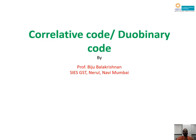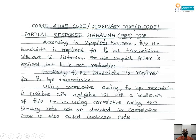Good morning. I am Professor Biju Balakrishnan working with SISGST Nehrul Nabi, Mumbai. The topic I am going to explain today is correlative coding, that is also known as duo binary coding or partial response signaling coding. One more name is dichode, that is a short form of duo binary code.